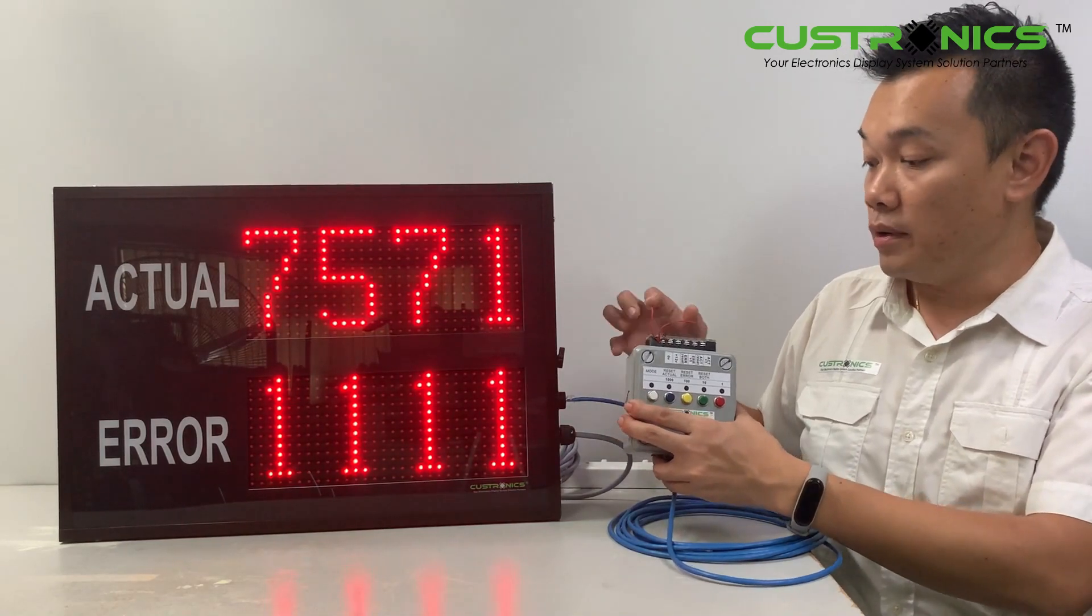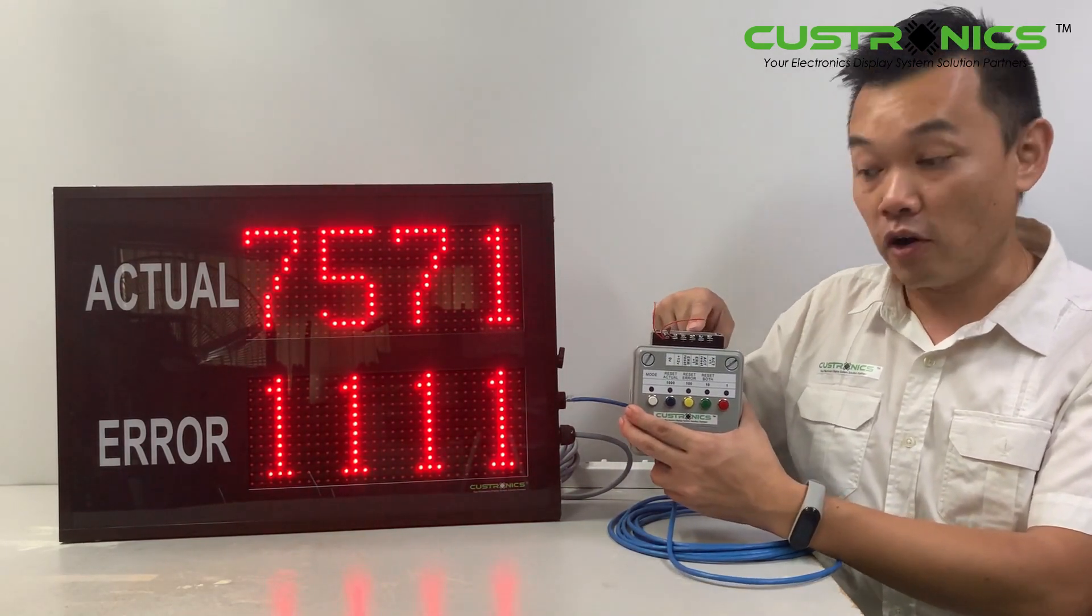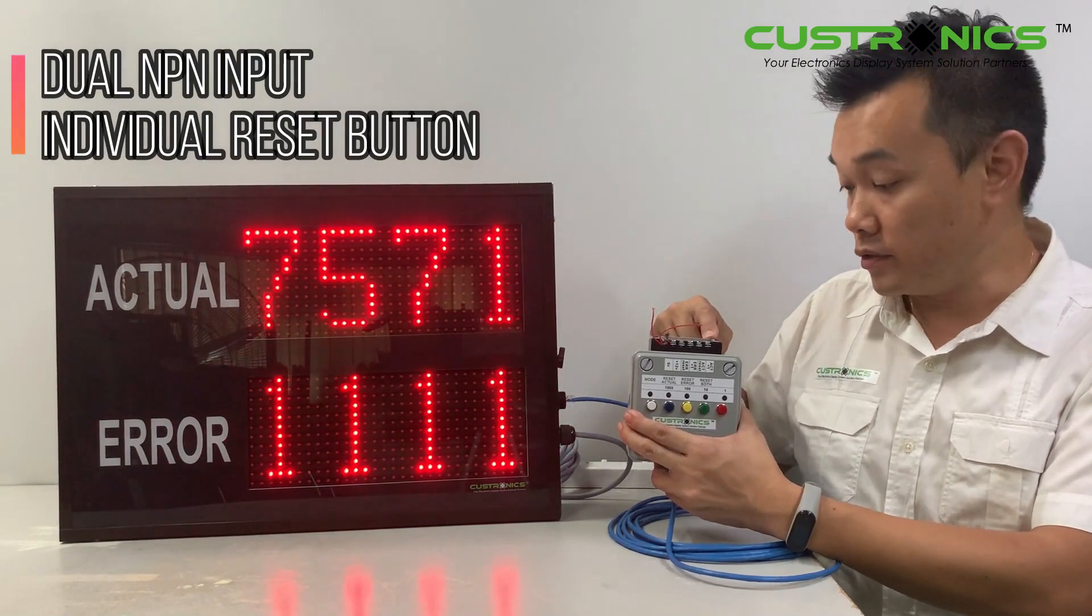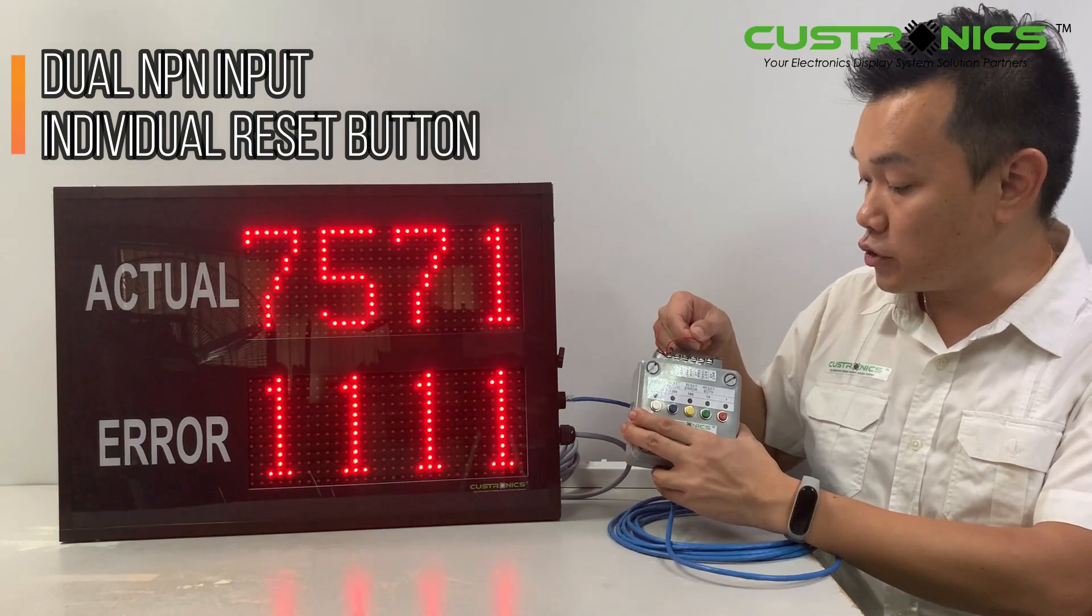To count, we use two NPN contacts. One is for plus one target and one is for reset. Let's start with the actual counter first.